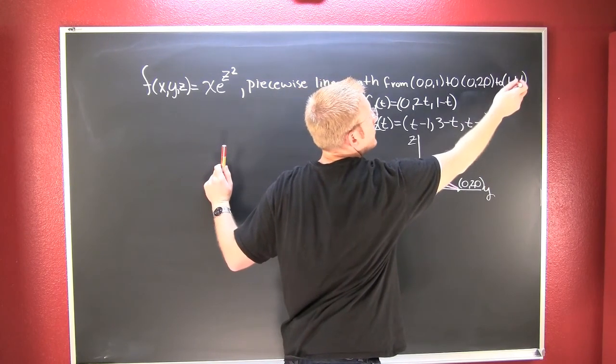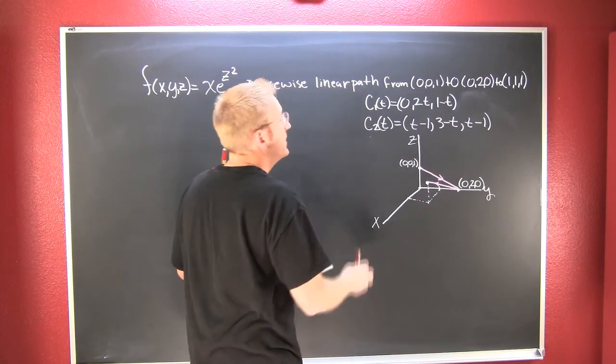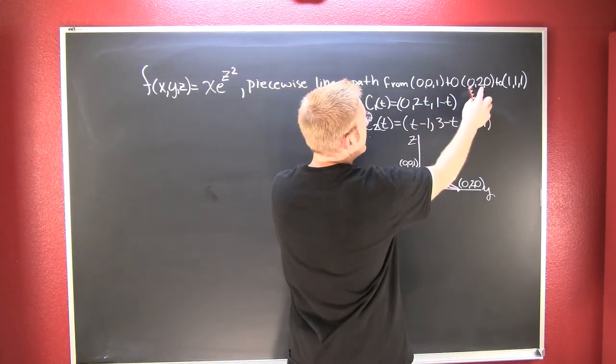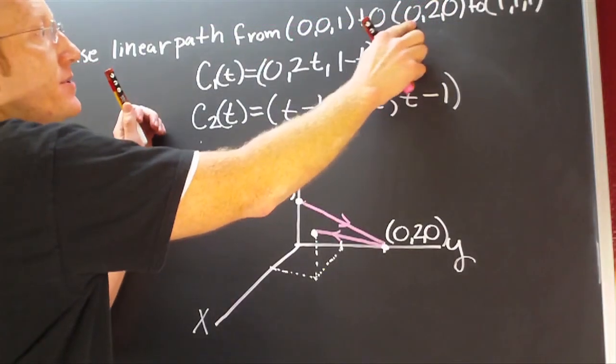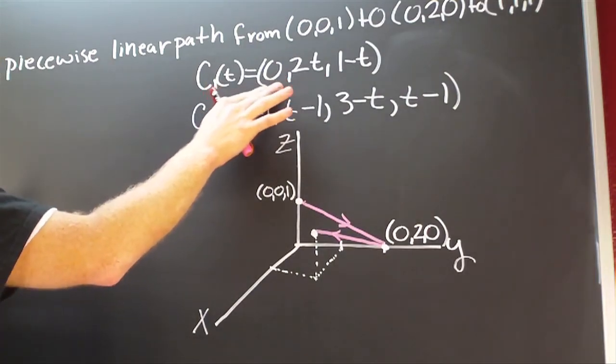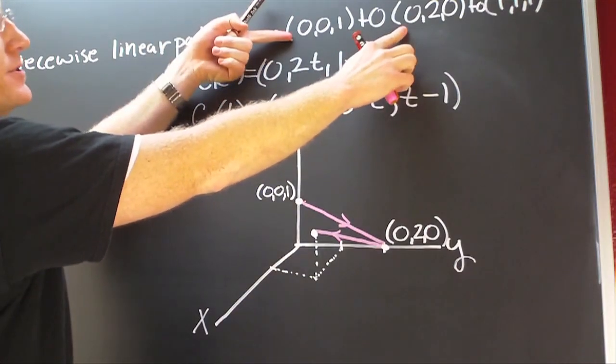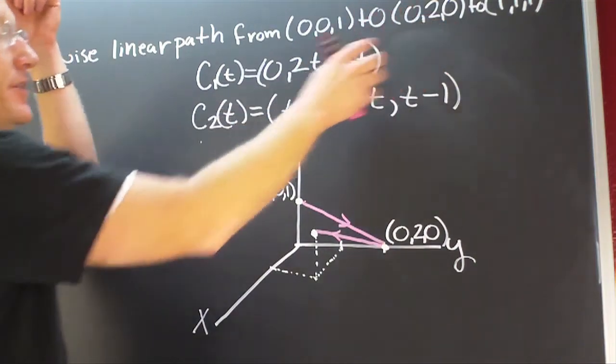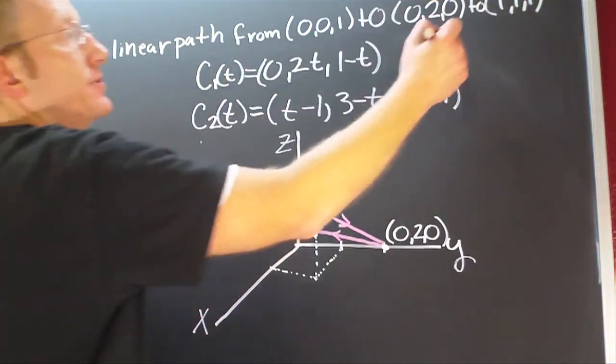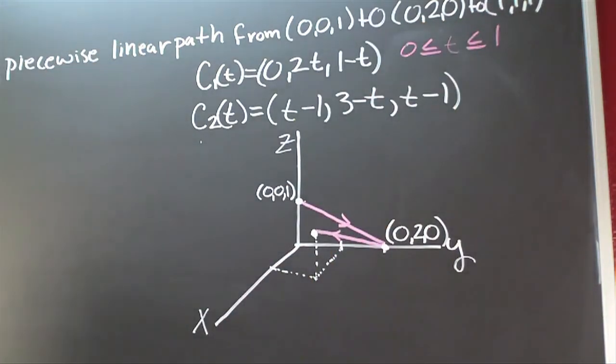To the point (1,1,1). I went ahead and took the liberties of parameterizing these paths. From (0,0,1) to (0,2,0), the path is going to be 0 in the x component, 2t in the y component, and 1-t in the z component as t goes from 0 to 1.